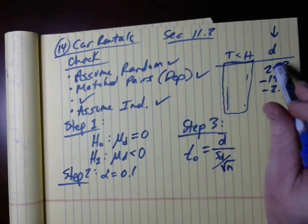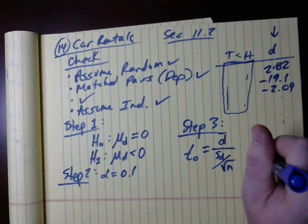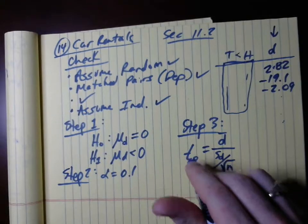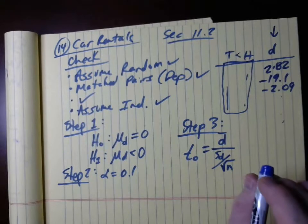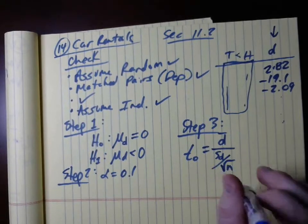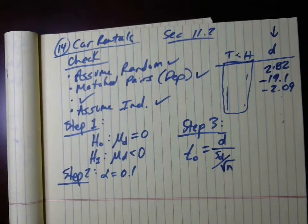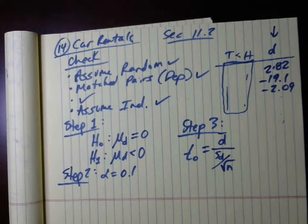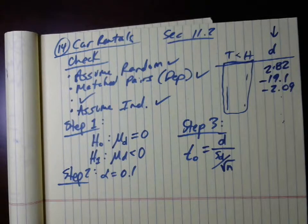So step three, we would end up calculating the test statistic — I'm not going to go ahead and do that, you can figure that out. Then you find the critical value and compare the test statistic to the critical value — same idea. And then we do the conclusion. Just to let you know, the claim here — step one of the flowchart: does the claim have a condition of equality? We can easily see that would be false because we're testing whether Thrifty is less expensive than Hertz, so that would be no. Then you go to step two: did we reject or fail to reject, and that will tell you the wording of your conclusion.